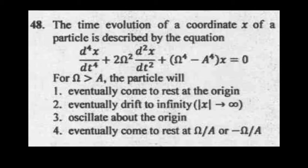The last option means when t tends to infinity, the limit of x should be ω/a or −ω/a. This problem has two important steps: first, find the solution x in terms of t, and then analyze that solution to determine which option is correct.